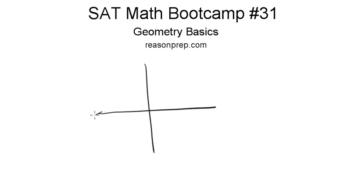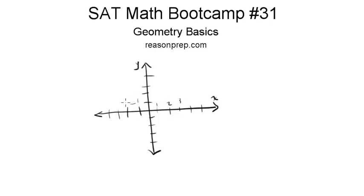First things first, your coordinate axes. We've seen these before but we should review how they work. This here is your x-axis, this here is your y-axis. It's usually given little tick marks — usually on graph paper — and each one of these tick marks denotes one unit, so this is one, two, three. To the right is positive, to the left is negative. Up is positive for the y, and down is negative for the y. You can think back to the number lines video — this is just two number lines intersecting each other.